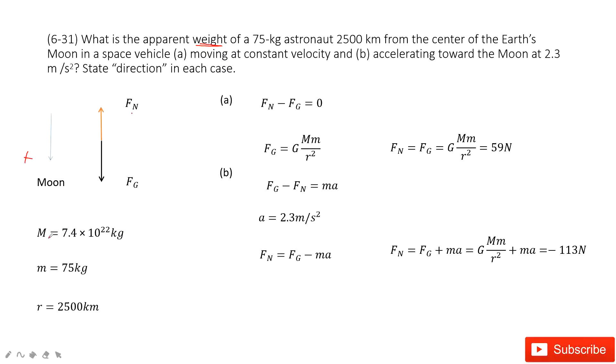The known quantities are listed there. We know the mass of the moon, the mass of the astronaut, and the radius. In the first one, we see the forces are balanced. Why? Because they tell us the astronaut is moving at constant velocity. Constant velocity means the acceleration is zero, so the forces are balanced.